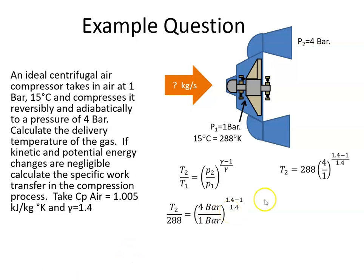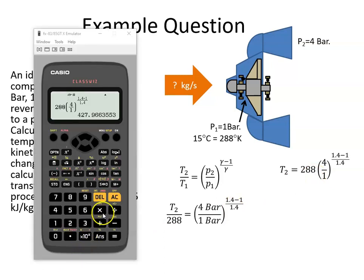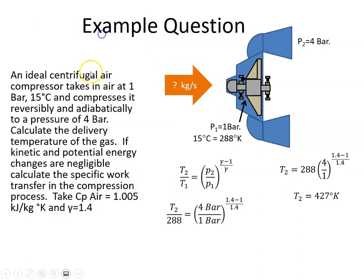So I cross-multiply both sides by 288, and if I put that into my calculator, I get 427.9, which is 427 Kelvin. We can probably round that up to 428. So that's the first part of the question. We've calculated the delivery temperature of gas.